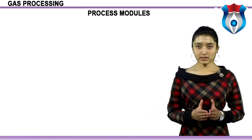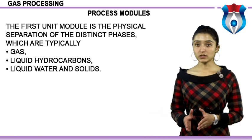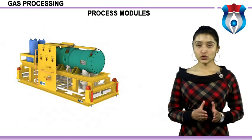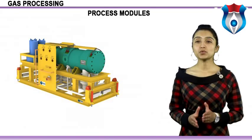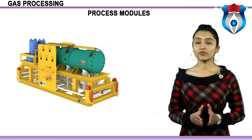The first process module is the physical separation of distinct phases: gas, liquid hydrocarbons, liquid water, and solids. Phase separation of the production stream is usually performed in an inlet separator. Hydrocarbon condensate recovered from natural gas may be shipped without further processing but is typically stabilized to produce a safe, transportable liquid. Unstabilized condensates contain a large percentage of methane and ethane, which will vaporize easily in storage tanks.